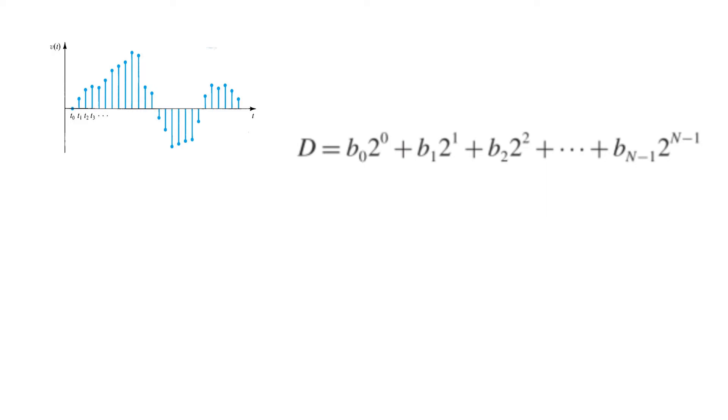Digital signals are usually represented with a sequence of binary digits that can take on one of two values. Let's call them 0 and 1 in this case. They're weighted in the representation of a digital signal by powers of 2.